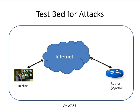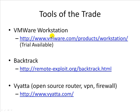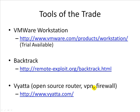Here is our test bed for the attacks. Basically everything is going to be run inside VMware, simply because I cannot afford a Cisco 7600 which might run into a couple of hundred thousand dollars. In this VMware environment we are going to have a software-based router using Vyatta, and then we will have a hacker machine which will be a BackTrack machine, and both these would have connectivity using the IP layer. I will be using VMware Workstation, downloadable from vmware.com — a trial version is available. The BackTrack hacker machine can be downloaded from its website, and Vyatta, which is an open source router/VPN/firewall, can be downloaded from vyatta.com.